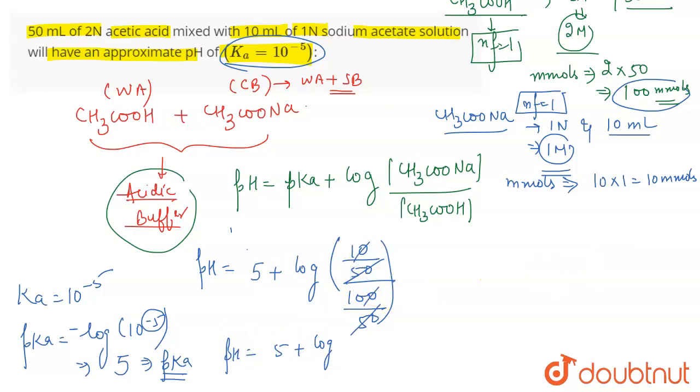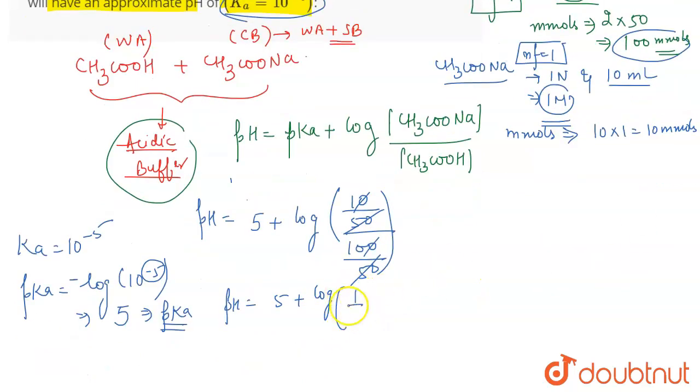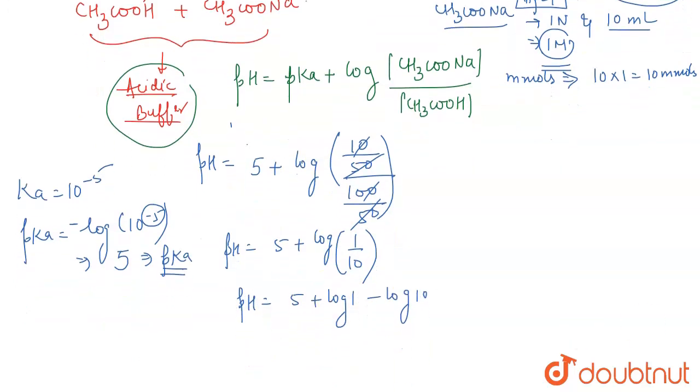Log of 1 by 10. So pH becomes 5 plus log 1 minus log 10. When it is in division, in log it is subtracted. Therefore pH will be 5 plus log 1 is 0, log 10 is 1. So therefore the pH of the solution becomes equal to 4.